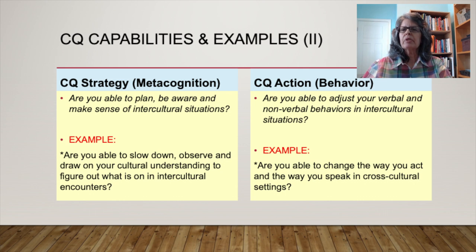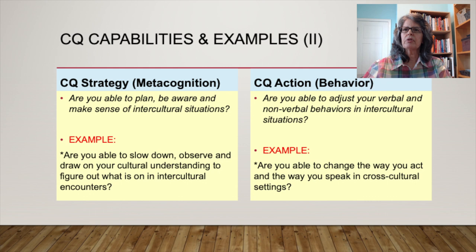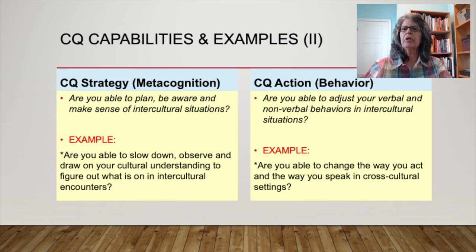Now some definitions and examples about the next two CQ capabilities: CQ strategy and CQ action. CQ strategy, or metacognitive CQ, addresses whether you're able to plan, be aware, and make sense of intercultural situations. For example, are you able to slow down, observe, and draw on your cultural understanding to make sense of an intercultural situation? When a meeting is not going well, or a conversation is becoming difficult, are you able to observe what's going on and also observe your own thoughts about what's going on?